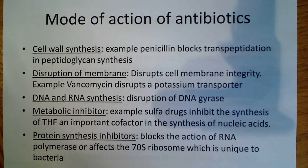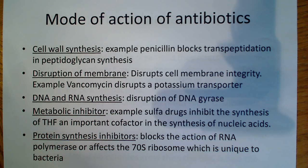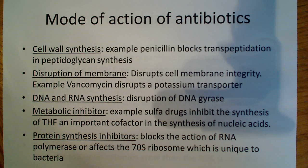DNA and RNA synthesis is another target. A common point of disruption is DNA gyrase, which is important for bacteria. Others are metabolic inhibitors. A good example of metabolic inhibitors are the sulfa drugs, which inhibit the synthesis of THF — an important cofactor in nucleic acid synthesis. So you're indirectly affecting nucleic acid synthesis through a metabolic pathway that produces this molecule.